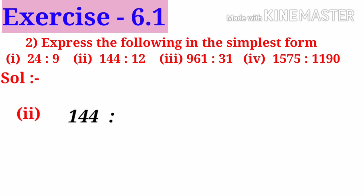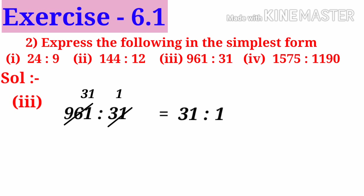Number 2: 144 is to 12. These numbers are divisible by 12. On simplification by 12, we get 12 to 1. So the ratio is 12 is to 1 in simplest form. Number 3: 961 is to 31. These numbers are divisible by the highest number 31. On simplification we get 31 to 1. The simplest form is 31 is to 1.